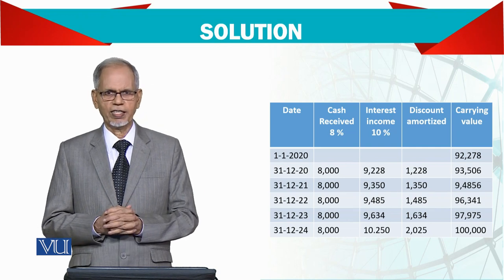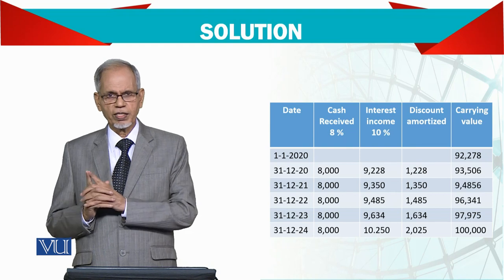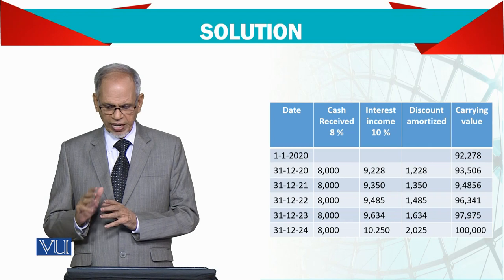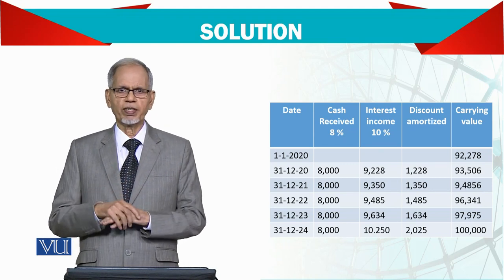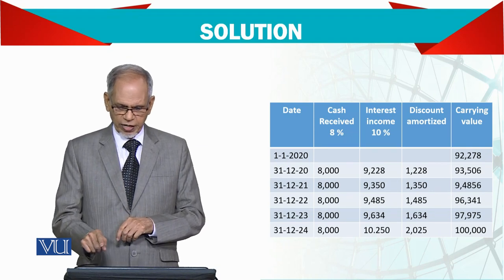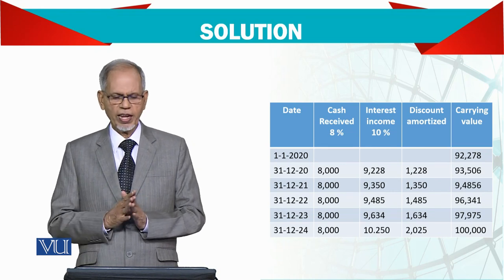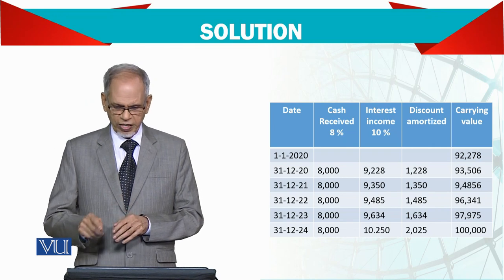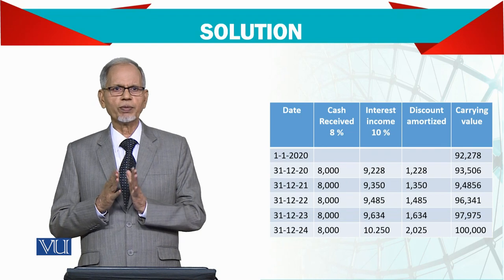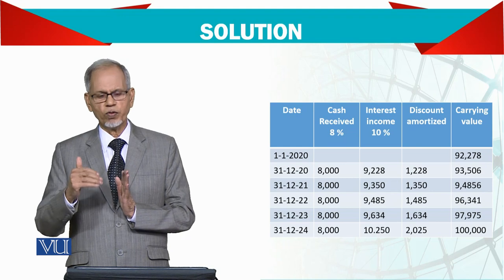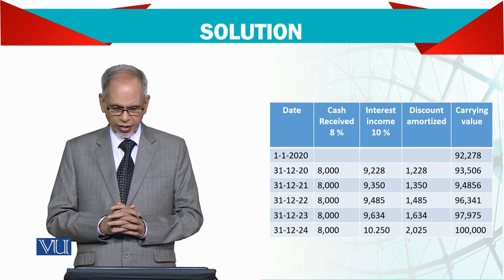आप dividend कहें या interest कहें, बात एक ही है — हर साल 8% के हिसाब से 1,00,000 पर cash receive किया। लेकिन जो discount है उसको भी adjust करना है। Carrying value 92,278 है — इस पर 10% के हिसाब से interest income बनती है 9,228। इसमें से 8,000 cash में मिला, बाकी differential 1,228 आपकी investment में add हो जाएगा।